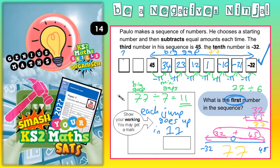Going the other way — since we were going down in 11s that way, going in the opposite direction means adding 11. So 45 add 11: plus 10 gives 55, plus an extra 1 gives 56. Same again: plus 10 gives 66, plus an extra 1 gives 67. So the first number in the sequence is 67.